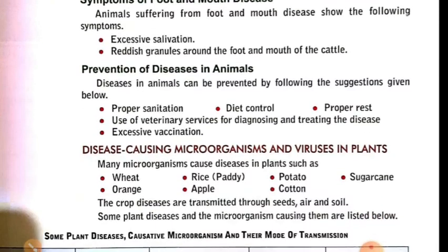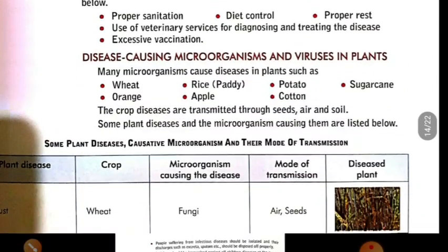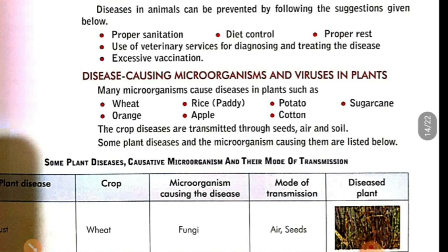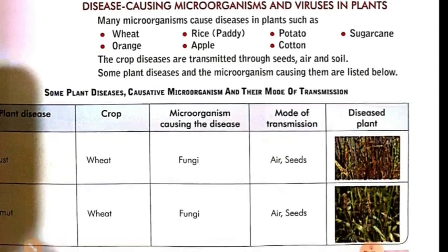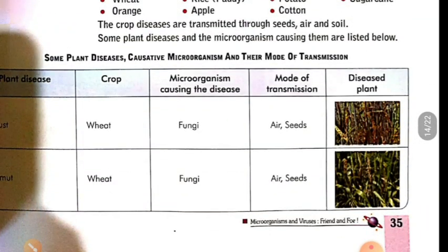Now we will discuss disease-causing microorganisms and viruses in plants. Many microorganisms cause diseases in plants, mainly affecting crop production such as wheat and paddy. A table is given showing plant diseases, the crops affected, the responsible microorganisms, and the mode of transmission. Diseases listed include rust and smut.